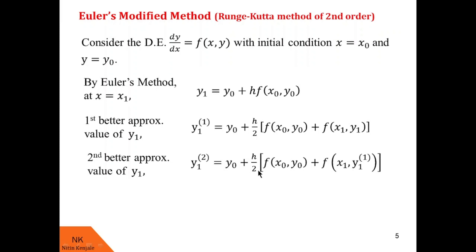Look at the pattern in these two formulas. y0 remains the same, h/2 is also the same, and f(x0, y0) is also the same. The only small change is that instead of f(x1, y1), we use f(x1, y11), where y11 is obtained in the previous step. Similarly, this y1 used in the first formula is obtained using Euler's method.